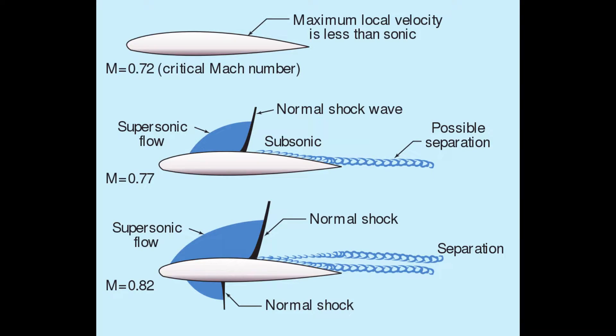As the aircraft enters the transonic regime, it can reach a speed known as the critical Mach number — the speed at which the airflow over the top of the wing reaches Mach 1. And as we learned in my supersonic flight video, whenever Mach 1 is reached it creates a shock wave. This shock wave creates a spike in drag, known as wave drag.